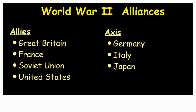I want to talk a little bit about our teams. We know that in World War I, alliances were one of the factors that kind of started that war, but we still have alliances in World War II. A lot of times we refer to them as either the Allies or the Axis Powers. The Allies include Great Britain, France, the Soviet Union, and eventually the United States. The Axis Powers are Germany, Italy, and Japan.